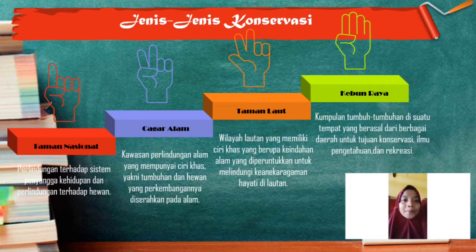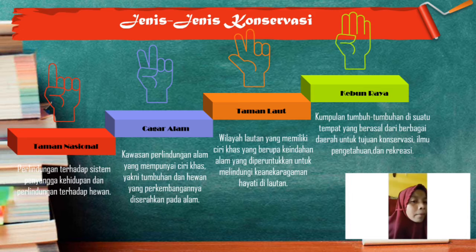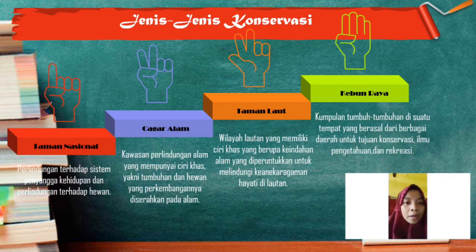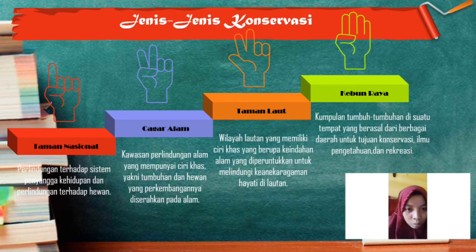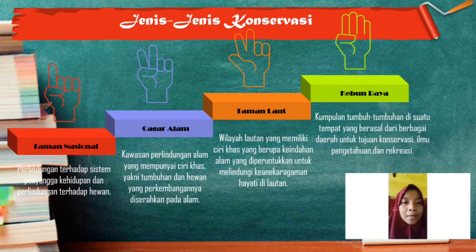The second type is the nature reserve (cagar alam), which has a characteristic feature: the development of its plants and animals is left to nature. Examples include Kawah Ijen Nature Reserve in East Java and the Rafflesia Nature Reserve in Bengkulu.